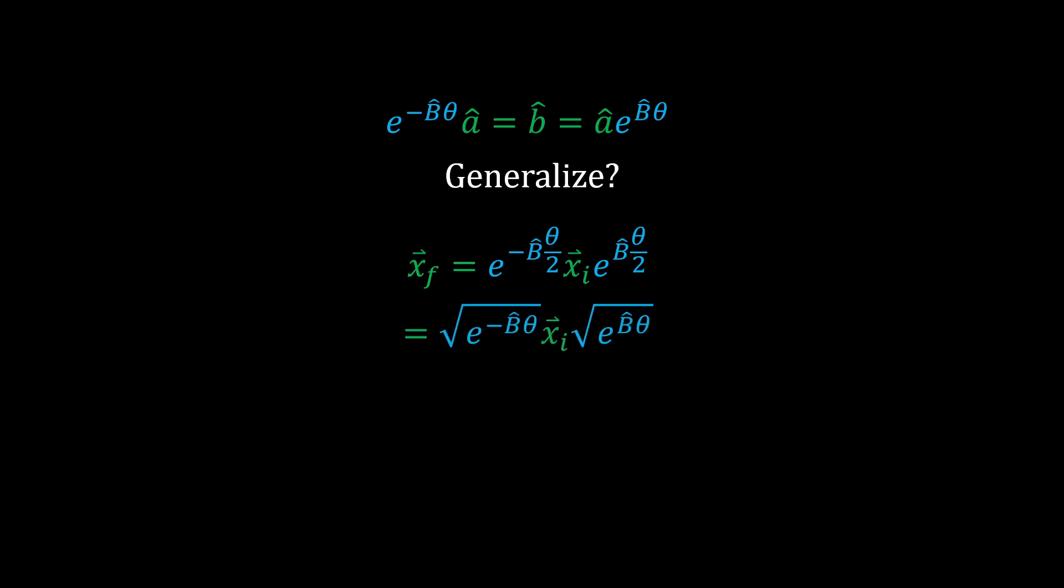This is equivalent to the square root of the exponentials, which is equivalent to the square root of the two vectors being used to form the rotation. This construction rotates any vector by theta and preserves magnitude.